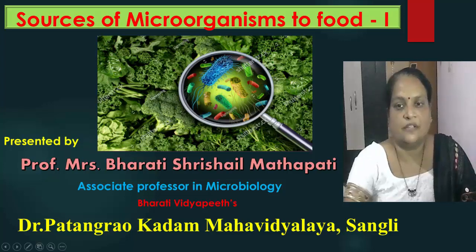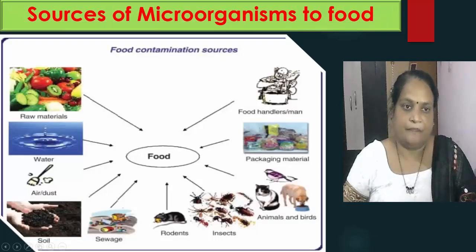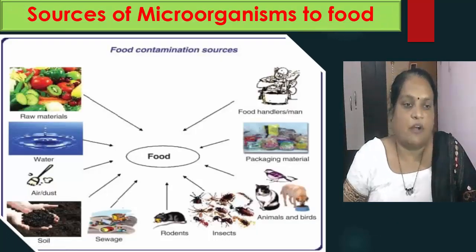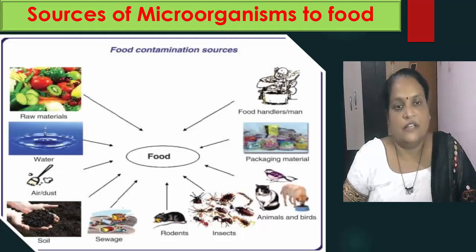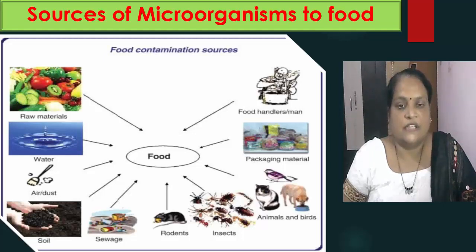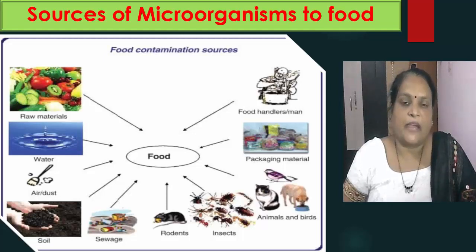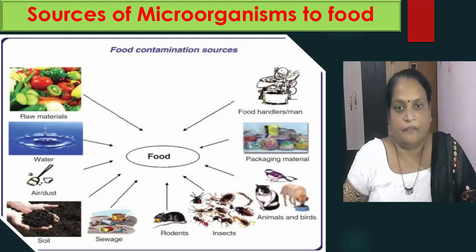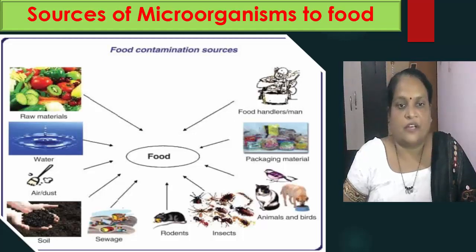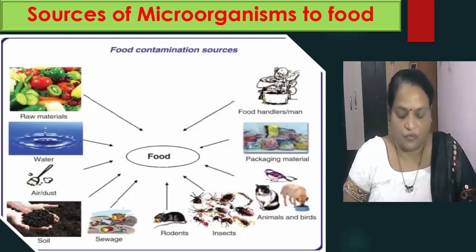Microorganisms enter the food through various sources, which include the raw materials, water, air or dust, soil and sewage. Microorganisms also enter the food through rodents, insects, animals and birds. Packaging material may also contribute some microorganisms to the food, and food handlers also contribute microorganisms to the food.